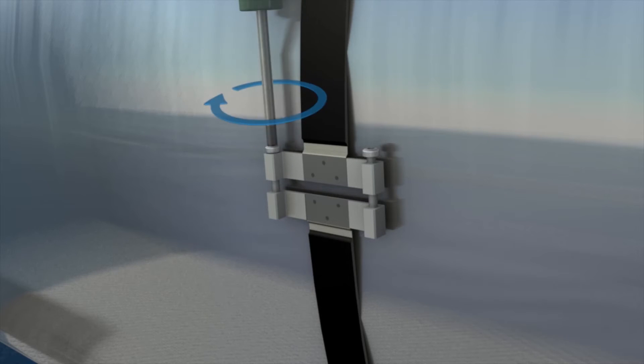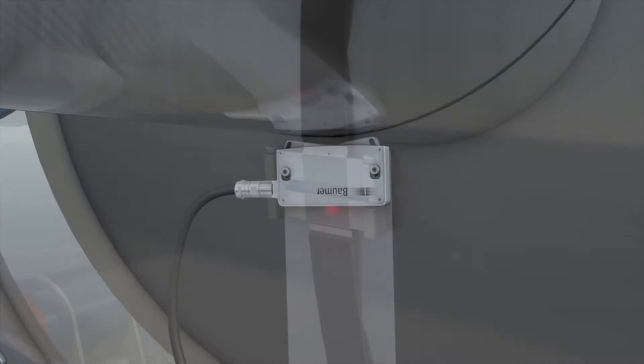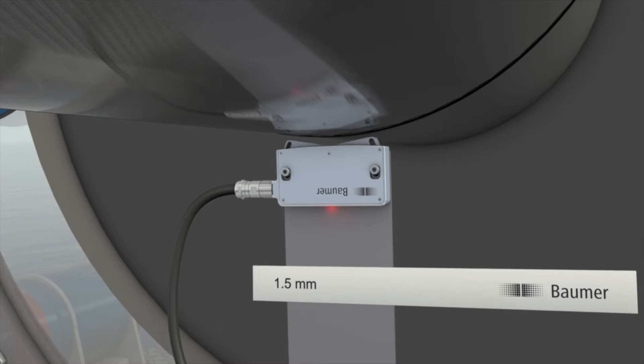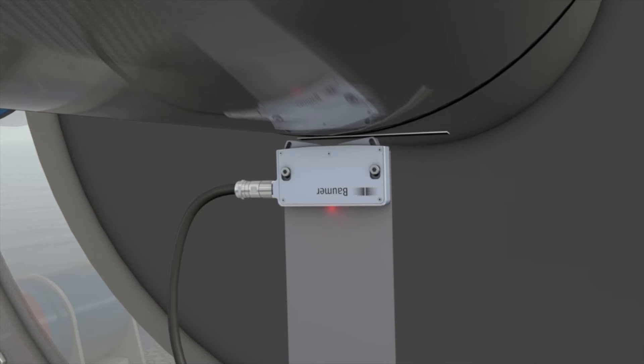Properly installed, the belt will reliably retain its position on the shaft at any temperature. The magnetic belt encoder features a self-diagnostic function.